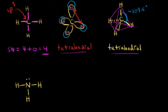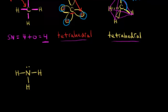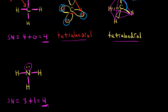Let's do the same analysis for ammonia, NH₃. The steric number is equal to the number of sigma bonds — that's one, two, three — so three sigma bonds, plus the number of lone pairs of electrons. There is one lone pair, so three plus one gives a steric number of four. We need four hybridized orbitals, so this nitrogen must be sp3 hybridized.